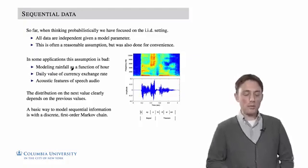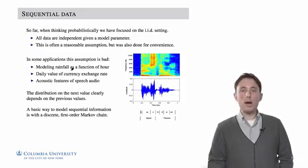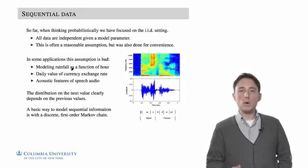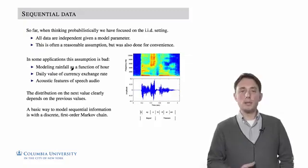For example, to give a few examples, if we wanted to model rainfall as a function of hour, we wouldn't want to model that as an independent random variable.